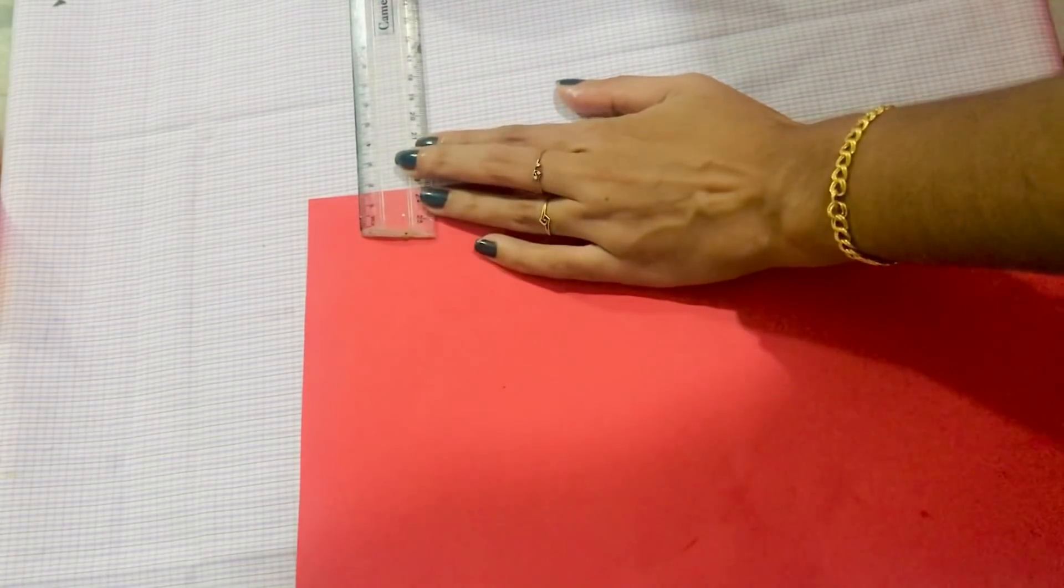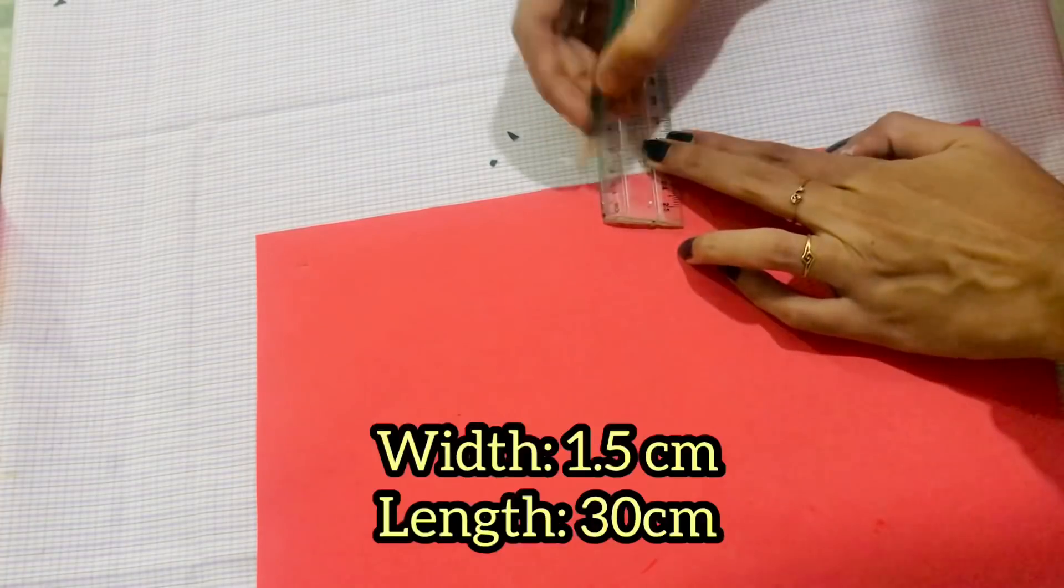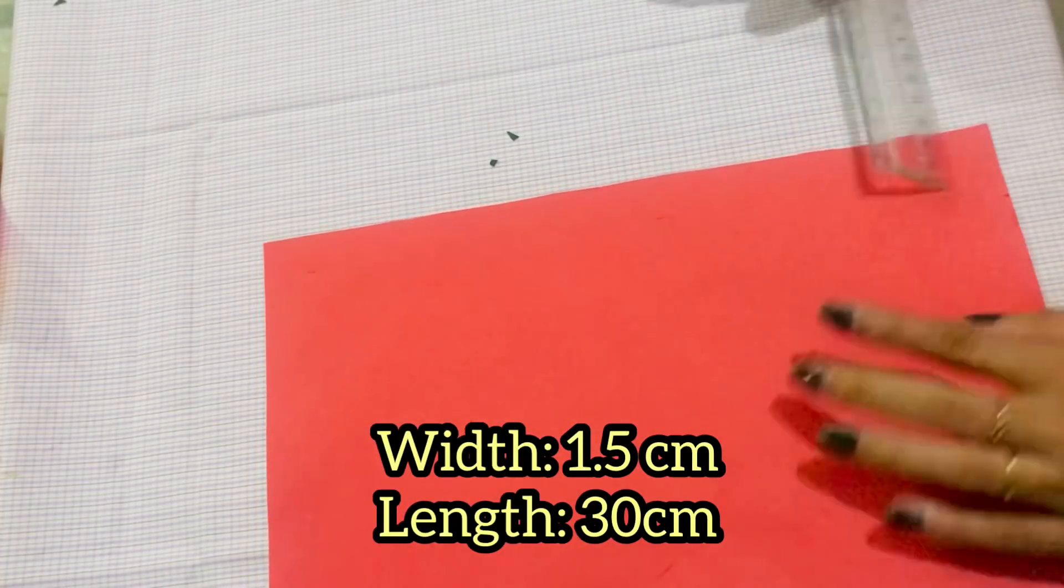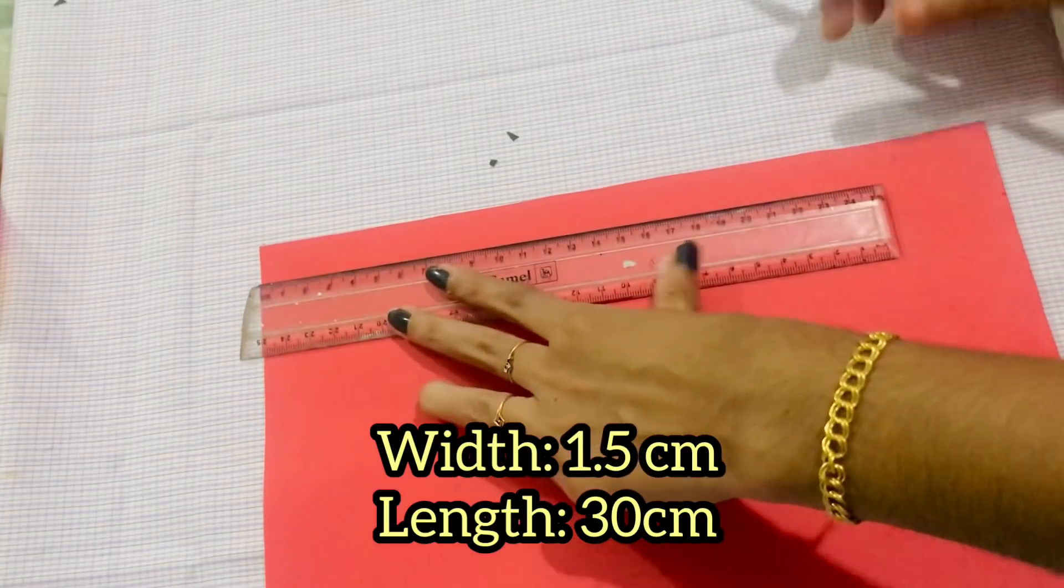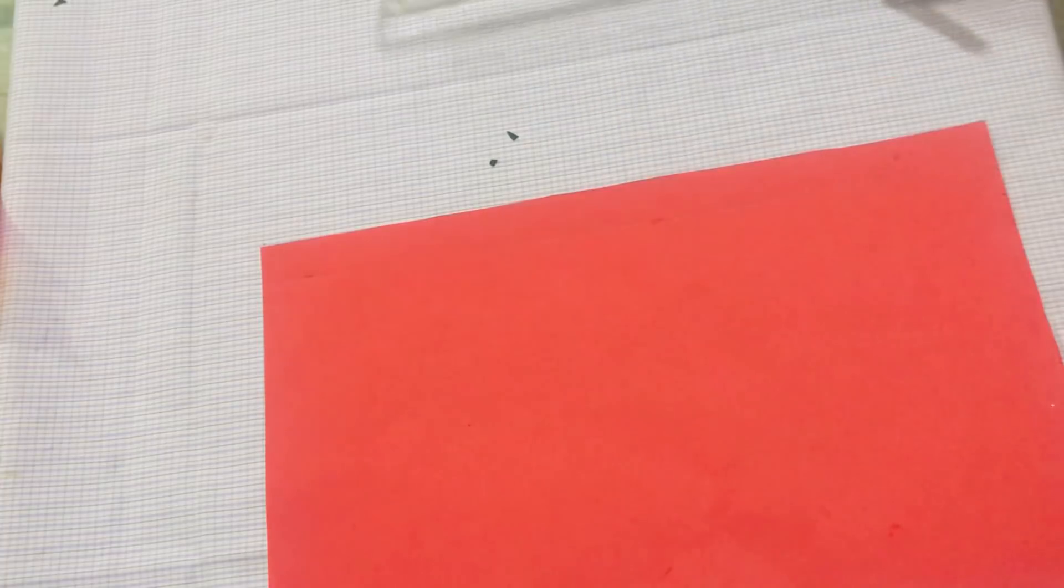I'm going to cut it in 1cm wide. The length of the A4 sheet is almost 30cm, and the width is about 1.5cm.